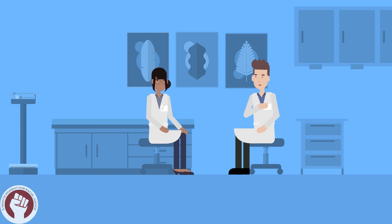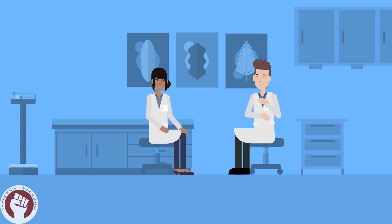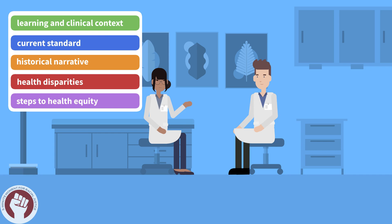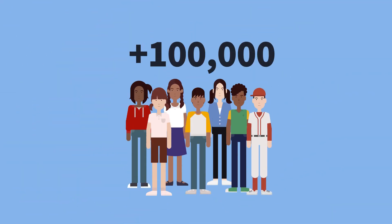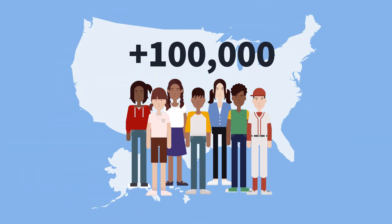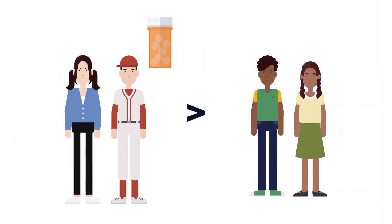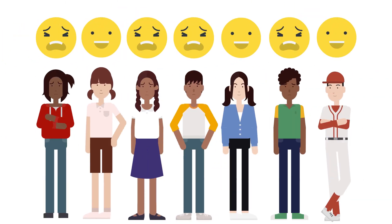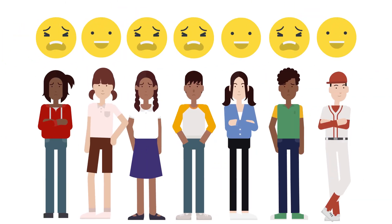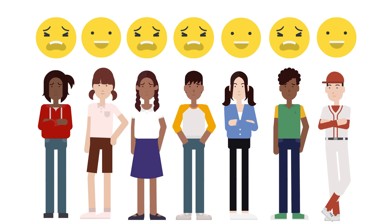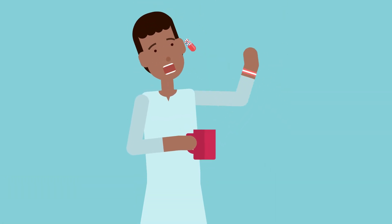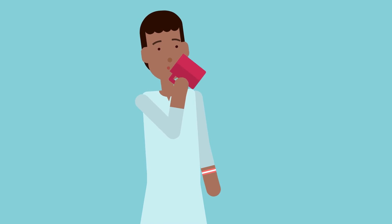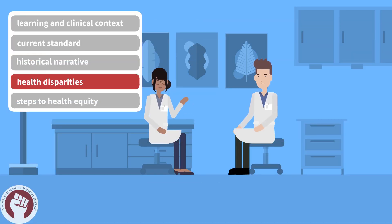Wow — implicit bias can run so deep. In a study of over 100,000 children across the United States, white children were more commonly prescribed opioids than self-reported non-white races. In long bone fractures, black children are less likely to achieve optimal pain reduction. And when it comes to appendicitis, black children are less likely to receive any pain medications at all, and significantly less likely to receive opioids.